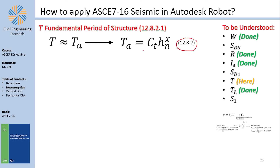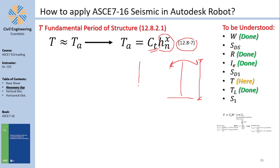The fundamental period increases nonlinearly with height — the relationship is HN raised to the power x. CT is a modification factor because different materials and structural types vibrate differently: a 10-meter steel structure vibrates differently than a 10-meter concrete structure.